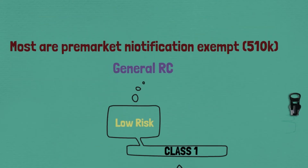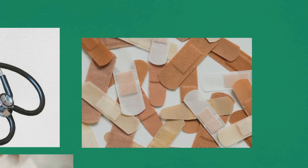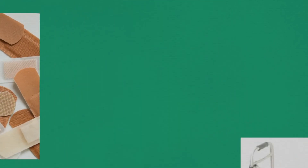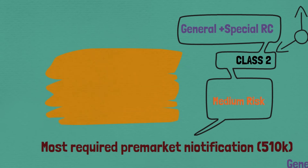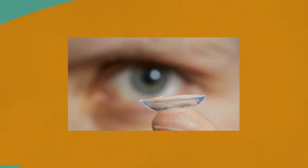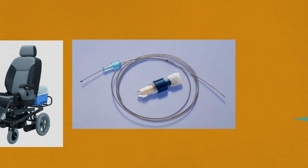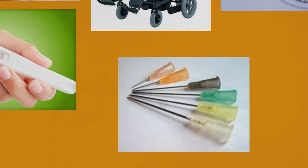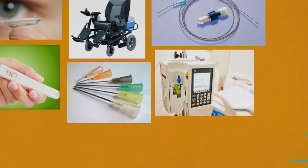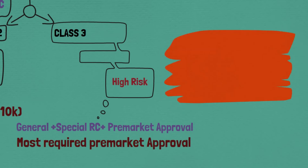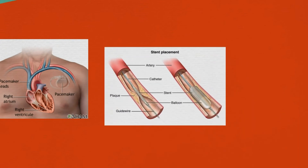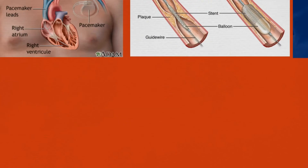Some examples of Class 1 devices include telescopes, spectacles and sunglasses, bandages, gloves, and mechanical wheelchairs. Some examples of Class 2 medical devices include contact lenses, electrically operated wheelchairs, catheters, pregnancy test kits, needles, infusion pumps, and X-ray machines. Some examples of Class 3 devices are pacemakers, balloon stents for angioplasty, brain stimulators, artificial heart valves, and hip joints.